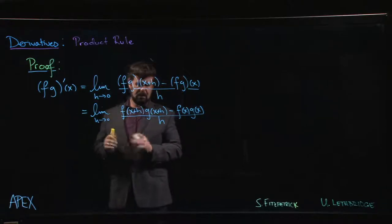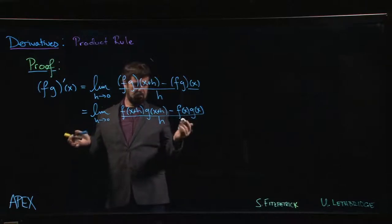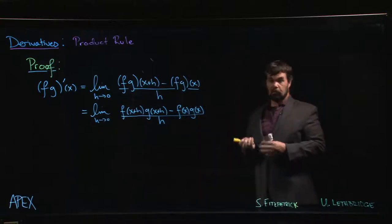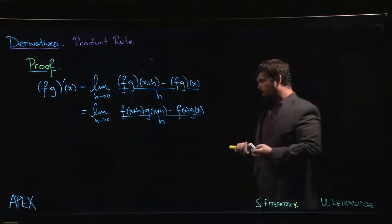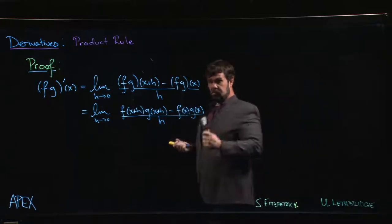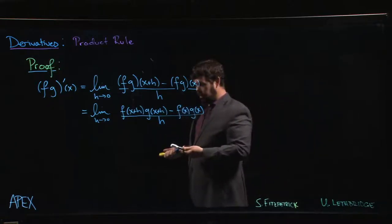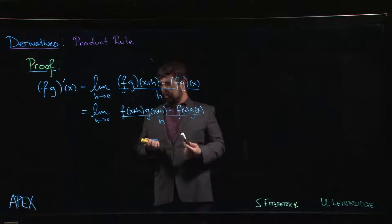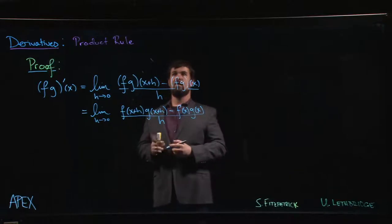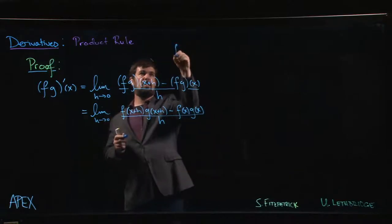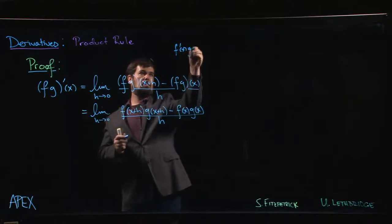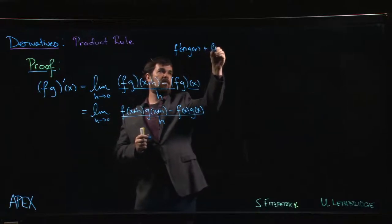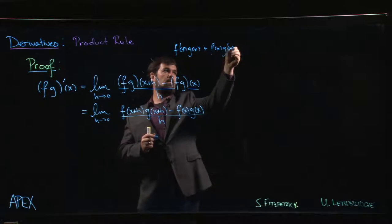Now you try to proceed from here and it's not clear what's going to happen. There's no obvious factoring or rearranging that we can do, but we know where we want to end up. We want to end up with f prime times g plus f times g prime.